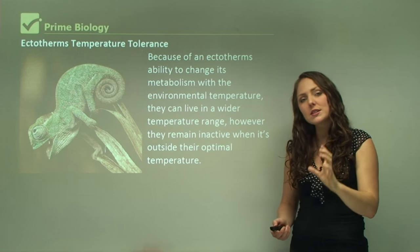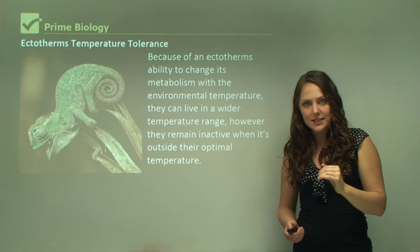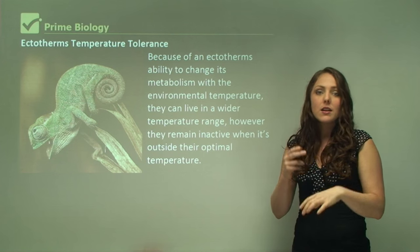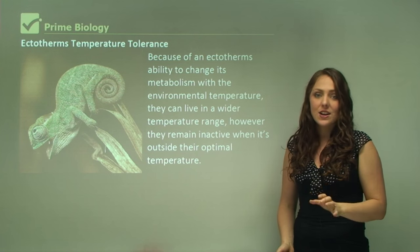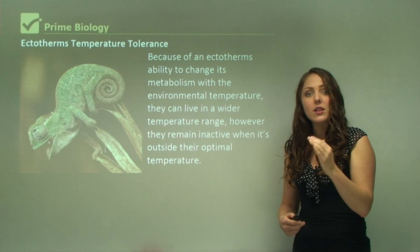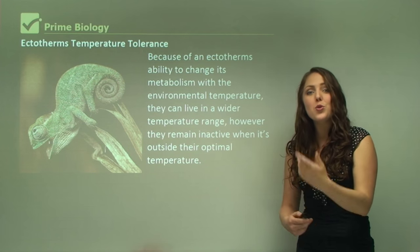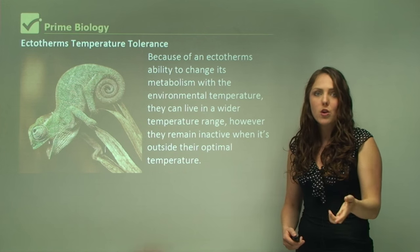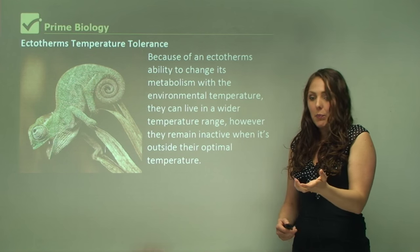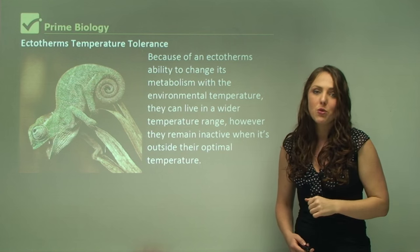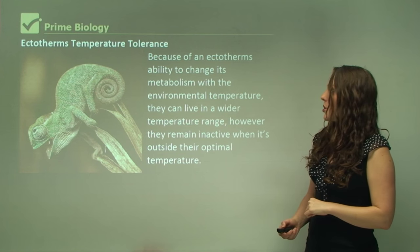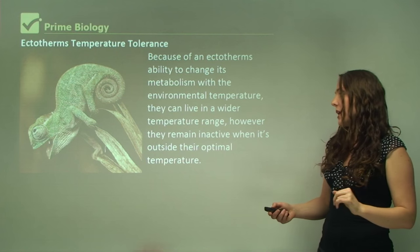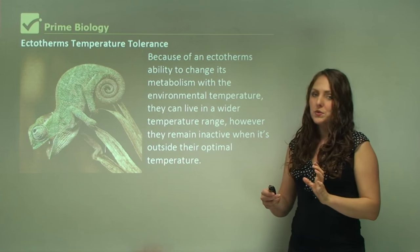Ectotherms have behavioral adaptations, such as moving into the shade during hot periods to prevent overheating. If they are in a cold temperature, ectotherms decrease their metabolic processes — the body slows down. Fast metabolic processes only occur when they are in a hot or optimal environment, so a warmer environment makes them move faster. That's why in a cold night you might walk over a snake and it can't move fast at all — its body is still cold. Because of this ability to change metabolism with environmental temperature, ectotherms can live in a wider temperature range, however they may remain inactive when outside their optimal temperature.